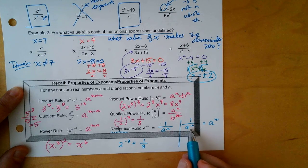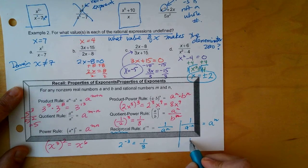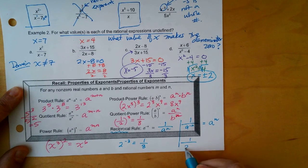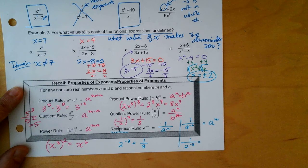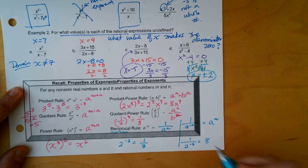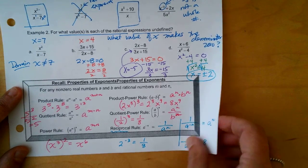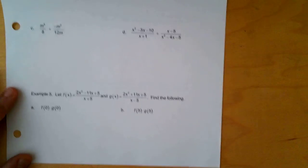Anytime you have a negative exponent, it tells you to take the reciprocal. So 1 over A to the negative N would become A to the Nth. And 1 over 2 to the negative 3rd would be 8, because the negative exponent flips it.